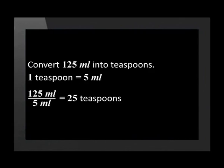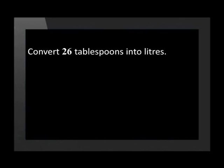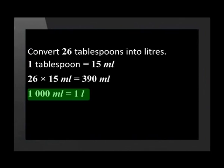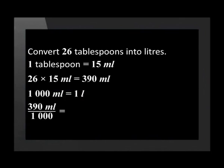Always remember to write down the units. Convert 26 tablespoons into liters. A tablespoon is larger than a teaspoon and contains 15 millilitres. This question asks for the final answer in liters, but we will convert from tablespoons to millilitres first. 26 tablespoons must be multiplied by 15 millilitres, which is 390 millilitres. But this does not answer the question. We still need to convert to liters. There are 1000 millilitres in a liter. To convert to liters, we divide 390 millilitres by 1000. The final answer is 0,39 liters.